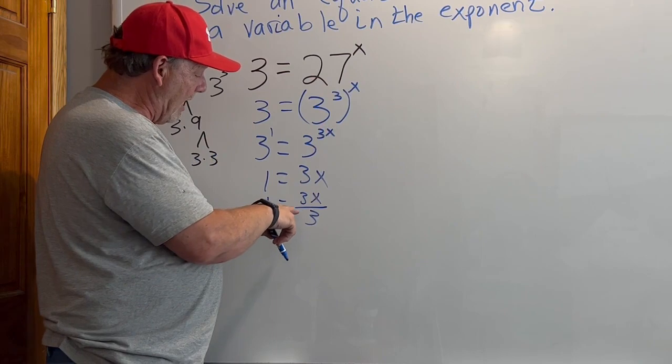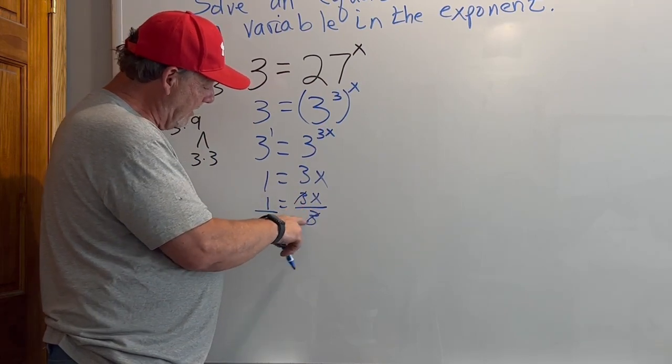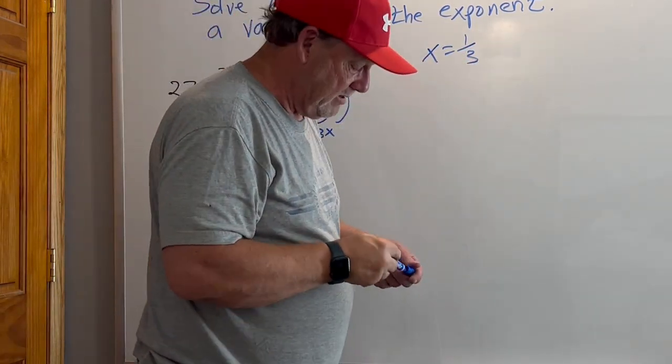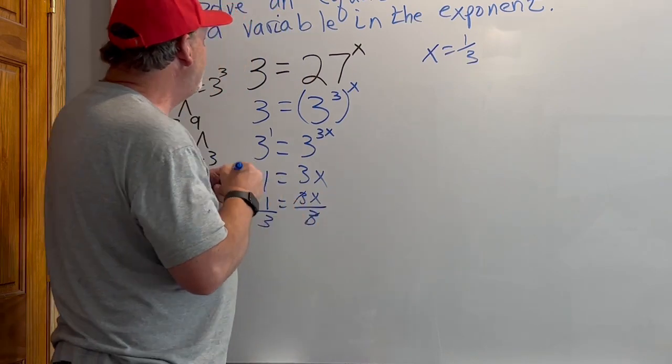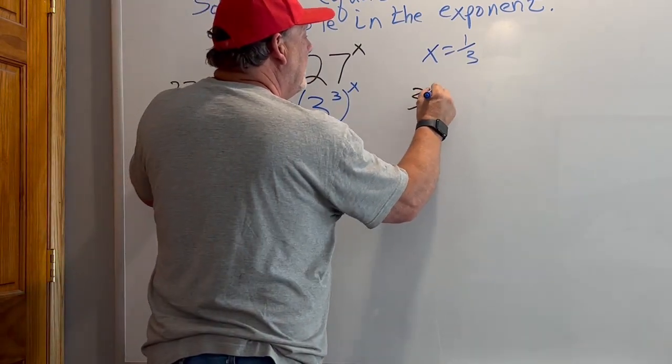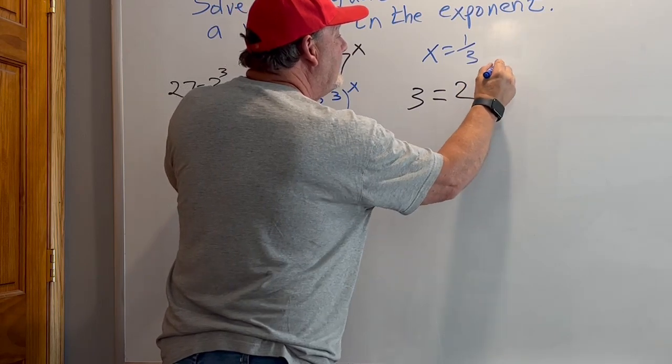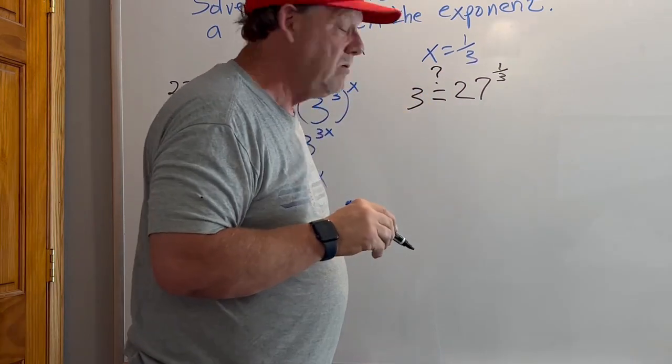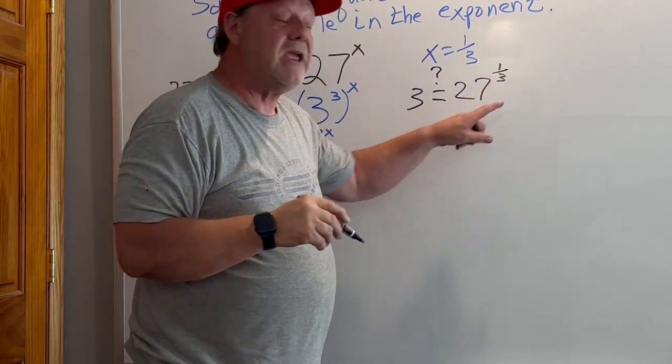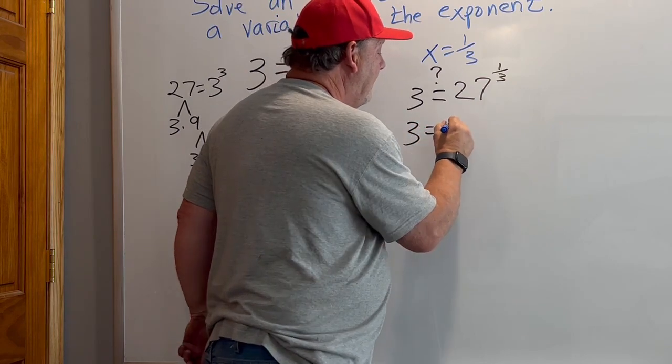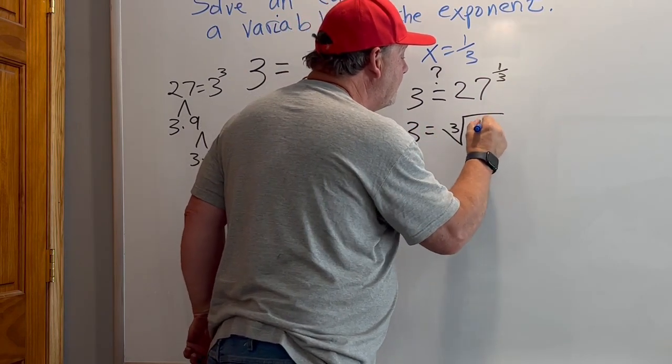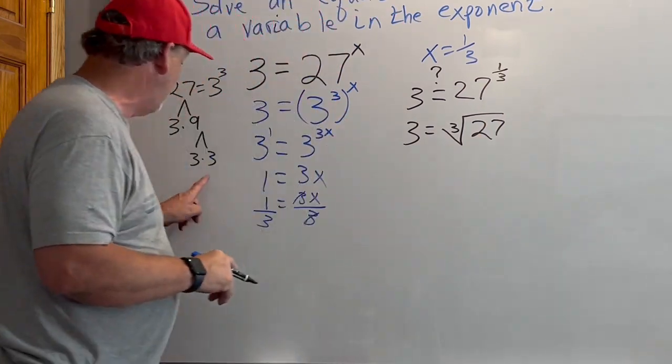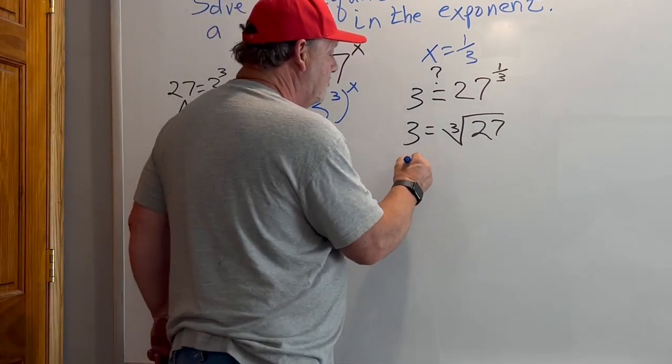So that's the answer. What does that actually mean? That means we're saying 3 equals 27 to the 1/3 power. Is that true? What's 1/3 power mean? That means the cube root of 27. What multiplied by itself three times will give me 27? 3 times 3 times 3, so 3 equals 3. Check.